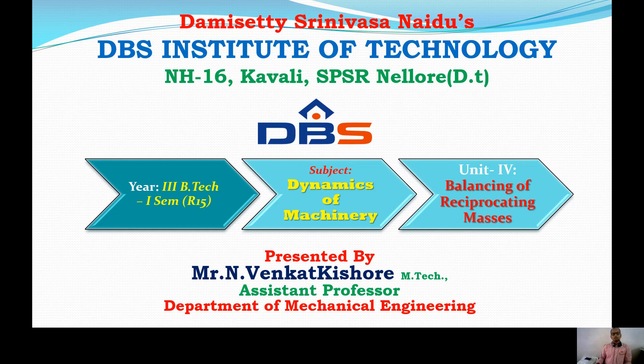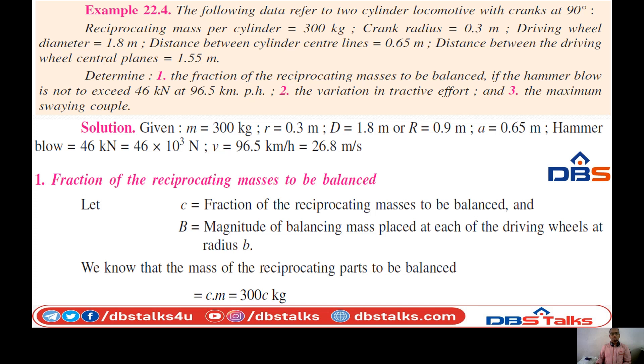In the last class we studied about the partial balancing of reciprocating masses or locomotives — and the effects of partial balancing: the swaying couple, tractive force, and hammer blow. Along the line of stroke, the unbalanced force results in the tractive force and swaying couple, while the unbalanced force acting perpendicular to the line of stroke is known as the hammer blow.